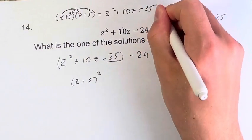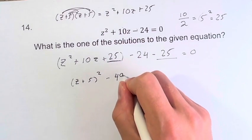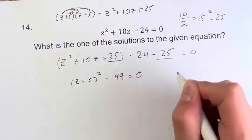...5 plus 5 is plus 10z, and then plus 5 times 5 is 25. So it checks back out. Then we do minus 24 minus 25, turns it to minus 49, is equal to zero.